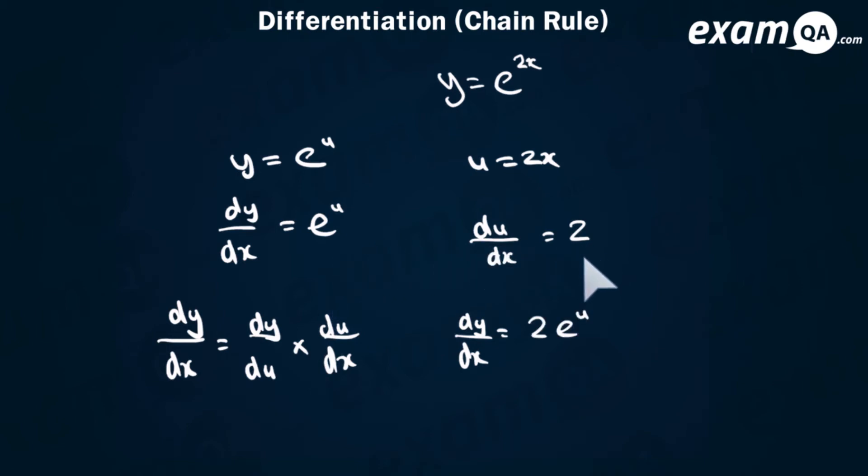Now again we don't want that u in there, so just replace it with what u is. u is 2x. And it's as simple as that.